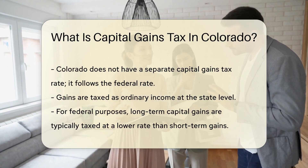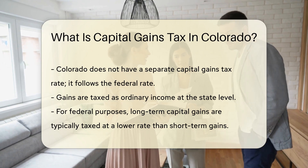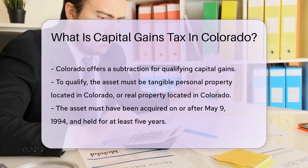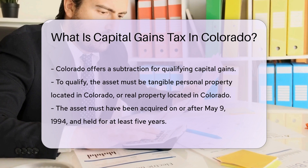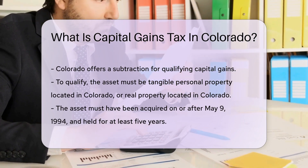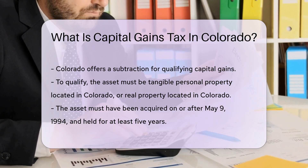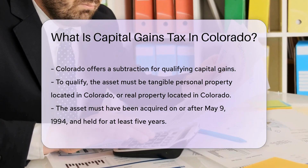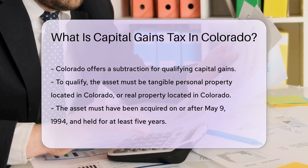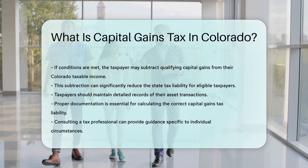Colorado offers a subtraction for qualifying capital gains. To qualify, the asset must be tangible personal property located in Colorado or real property located in Colorado. Additionally, the asset must have been acquired on or after May 9, 1994, and held for at least five years. If these conditions are met, the taxpayer may subtract the qualifying capital gains from their Colorado taxable income. This can significantly reduce the state tax liability for eligible taxpayers.